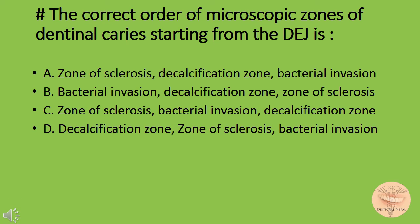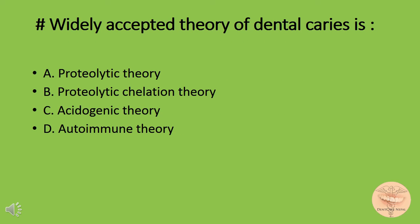The correct order of microscopic zones of dental caries starting from the dentino-enamel junction is: option A) zone of sclerosis, decalcification zone, bacterial invasion; option B) bacterial invasion, decalcification zone, zone of sclerosis; or option D) decalcification zone, zone of sclerosis, bacterial invasion. The correct answer is option B: bacterial invasion, decalcification zone, and zone of sclerosis. Mnemonics for these will be found in the description below.